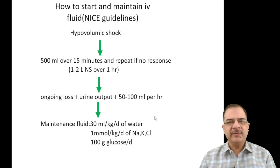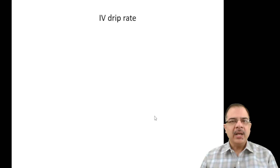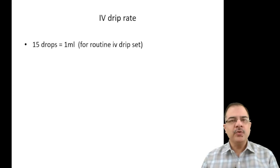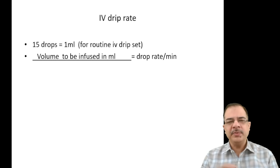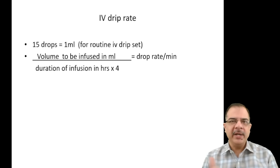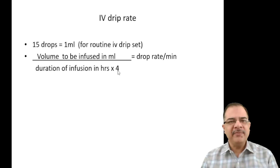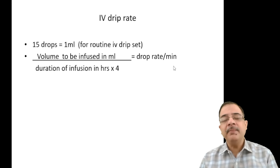For IV drip rate calculation using a routine IV set: 15 drops equals 1 ml. The formula is: Volume to be infused (ml) ÷ Duration of infusion (hours) × 4 = drop rate per minute.